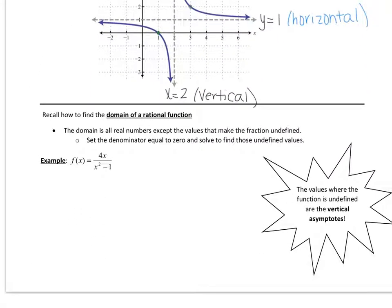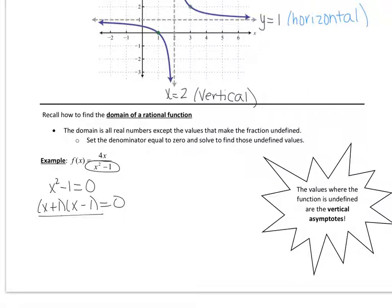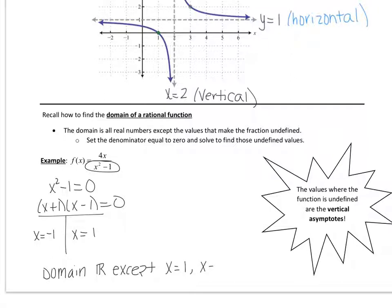Now let's move on to trying to find the domain of a rational function. You should remember this from our unit on finding restricted domains. Here's a fraction, and we know that the domain will be all real numbers except the values that make the fraction undefined. So we're going to take the denominator and set it equal to zero. We're going to factor by DOTS and solve. This gives x equals negative 1 and x equals positive 1. So the domain is all real numbers except when x is equal to 1 and when x is equal to negative 1.